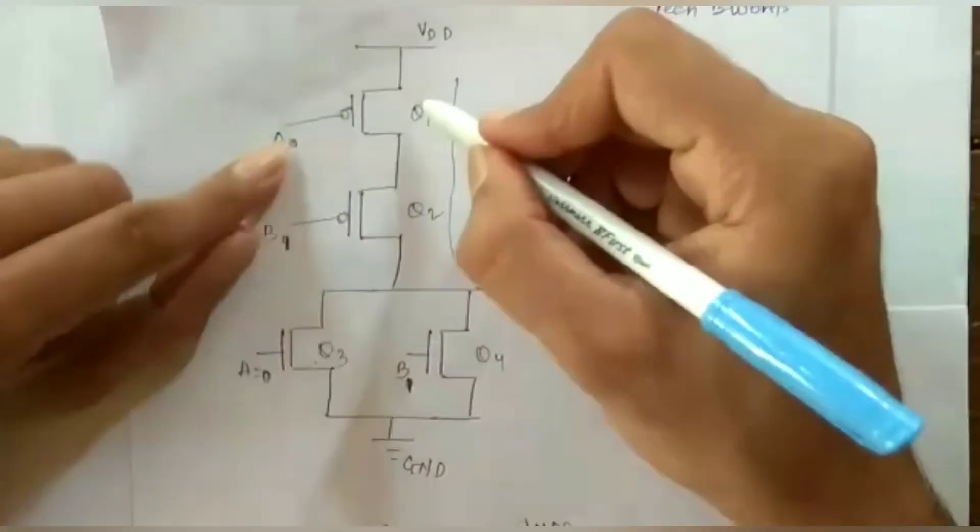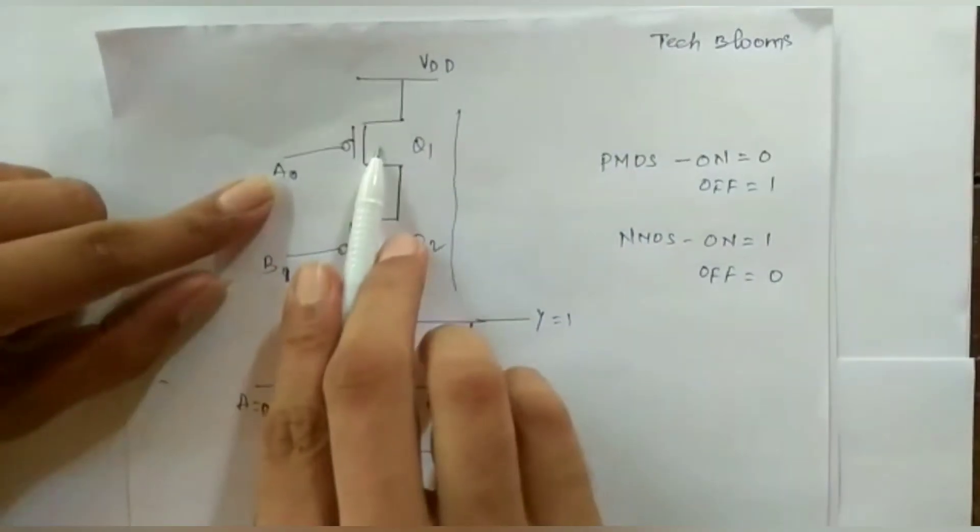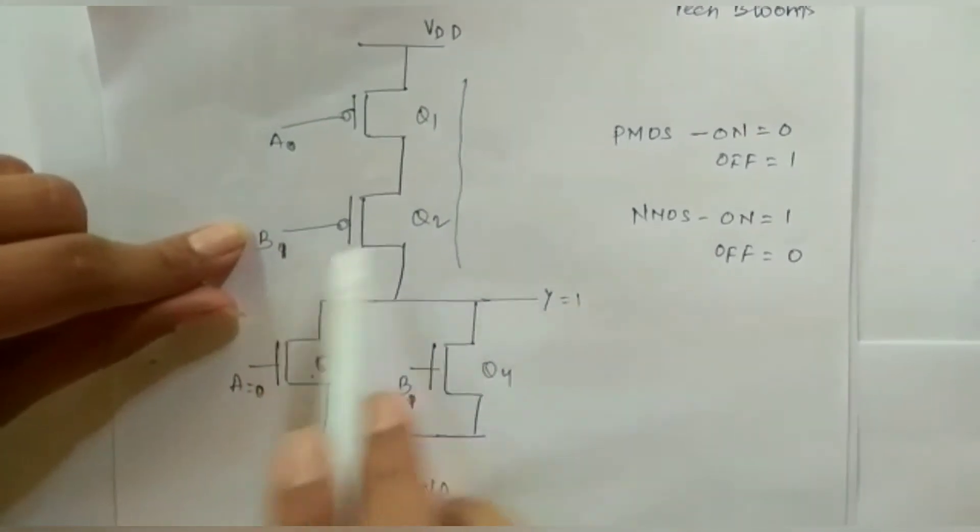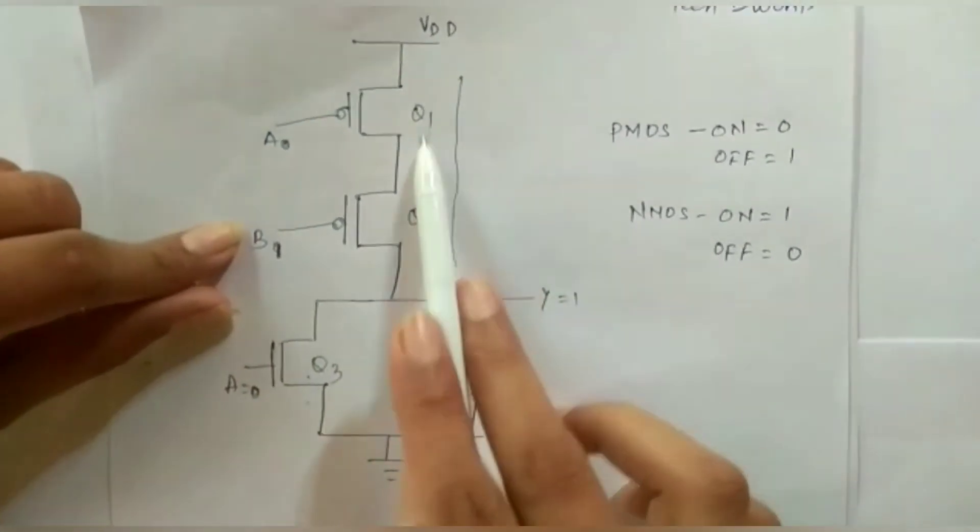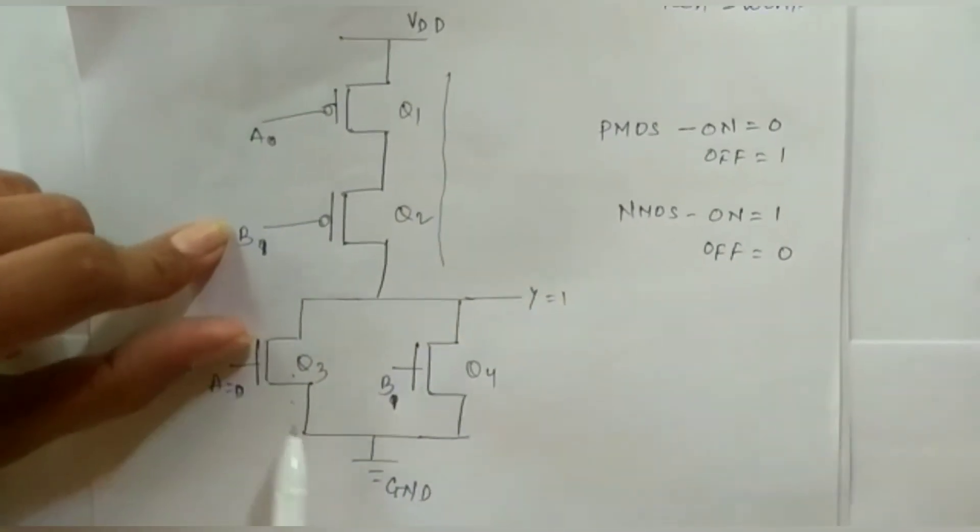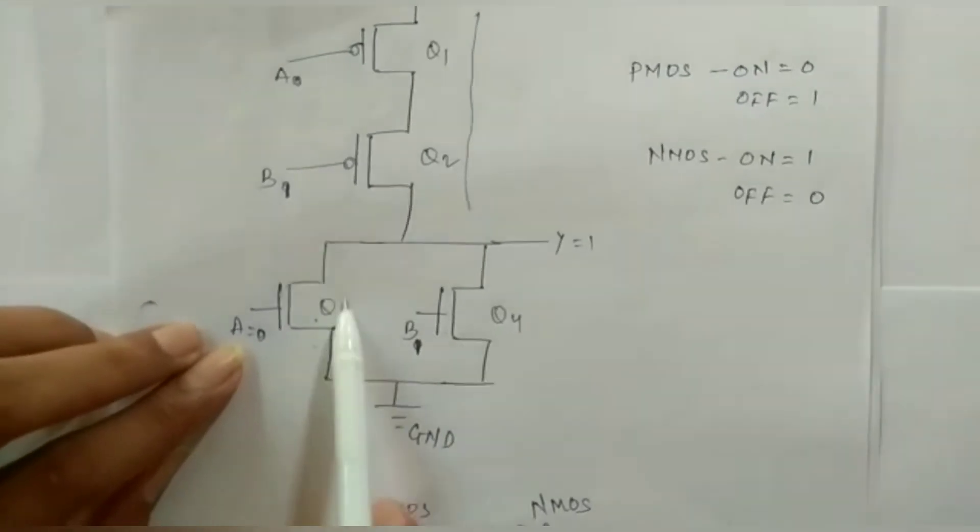A is 0, here this PMOS for 0 it will be ON. But because of this 1 it will be OFF and the connection will be not connected to the output. Since A is 0 this will be open circuited.